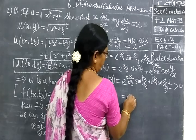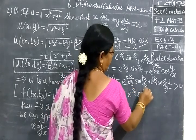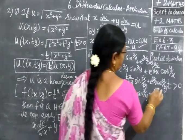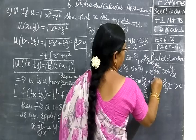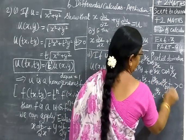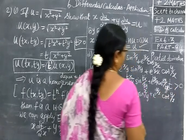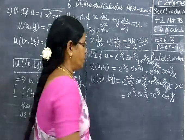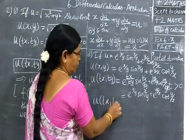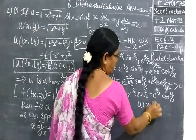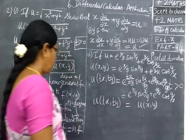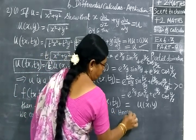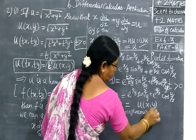The t values cancel in the ratios tx by ty, giving us back e power x by y times sin x by y plus e power x by y times cos x by y. Since all the t's are getting cancelled, u of tx, ty equals the original function u of x, y. Therefore u is a homogeneous function.